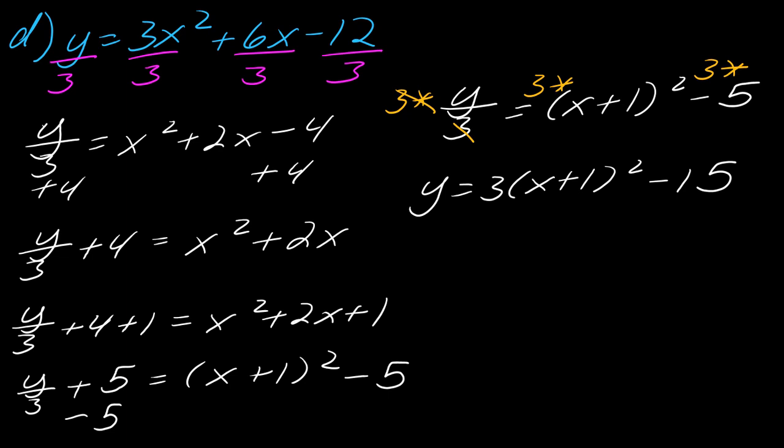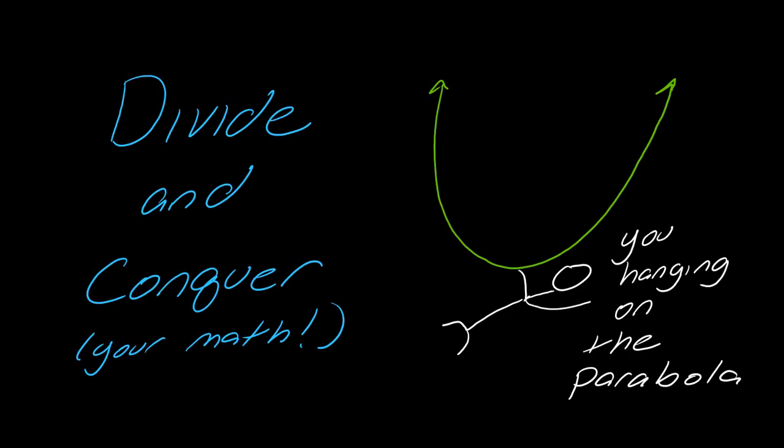So there's my final equation: y equals three times x plus one squared minus fifteen. I have a few more examples if you'd like to see them, but this video is already getting kind of long, so I'll stop here and drop a link in the comments to three more examples if you want to see even more. Thanks for watching, and I'll see you next time.